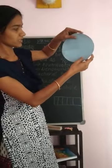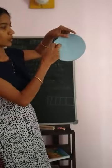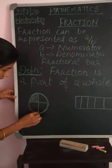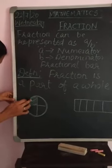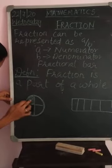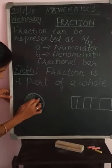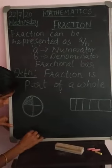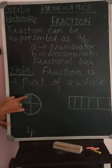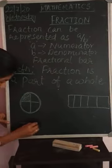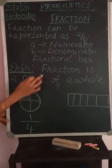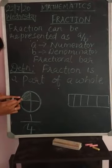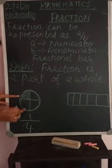Now if you take like this — this is whole, 4 parts, right? Children, what is the fraction of this shaded part? I have divided a circle as 1, 2, 3, 4 — 4 parts. So the total part is 4. In this, only 1 part is shaded. So this is 1 by 4 — part of a whole. How many parts are shaded? Only 1 part. So 1 by 4.